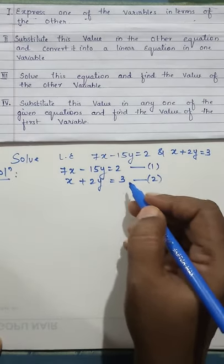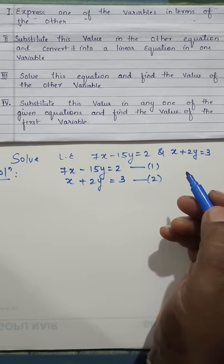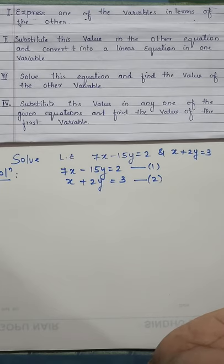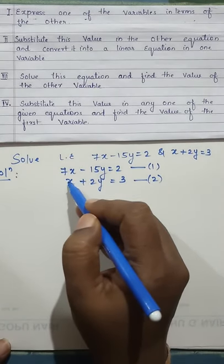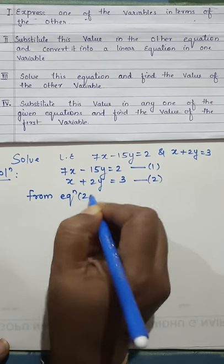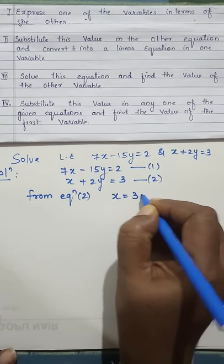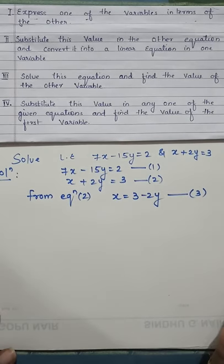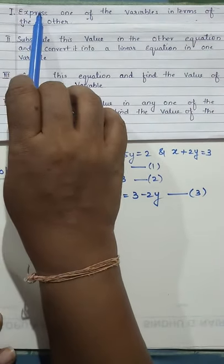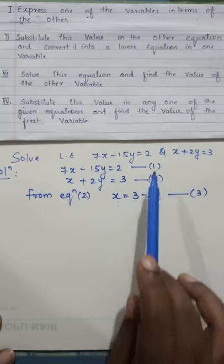Now from any one of this equation, I will express in x form or y form. Now for expressing in x form or y form, if there is coefficient 1 in any of the variables, that equation will be preferable or easy. So here I can see in equation 2, I have x with coefficient 1. So I will take from equation 2. So I am expressing equation 2 in x form. So it is x equal to 3 minus 2y. Now number this as 3. Later on I will tell you why I have numbered it as 3. Now substitute this. This is our first step. Express one of the variable in terms of other. So I have expressed one variable in terms of other from any one of this equation.